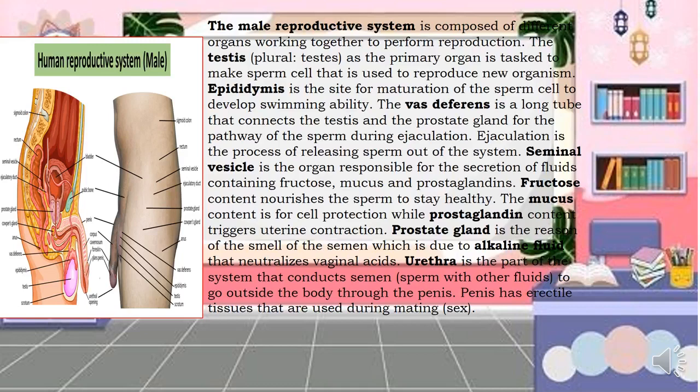The epididymis is the site for maturation of the sperm cell to develop swimming ability. The vas deferens is a long tube that connects the testes and the prostate gland, serving as the pathway of sperm during ejaculation. Ejaculation is the process of releasing sperm out of the system.